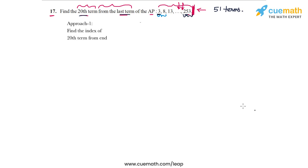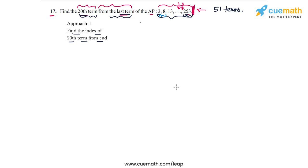In the first approach, we will find the index of the 20th term from the end and then find that term. We know the term we are looking for is the 20th from the end, but what is its position — its index — in the AP in its original form? We find that first, then find the term. This is tricky for some students, so follow carefully.